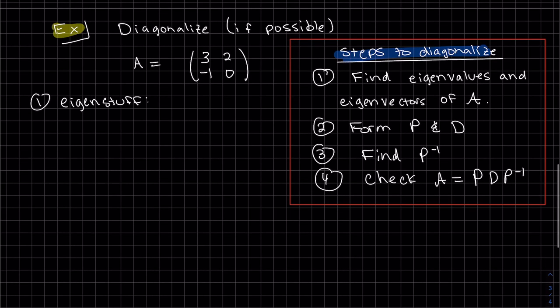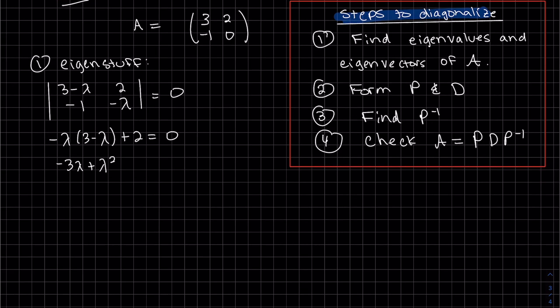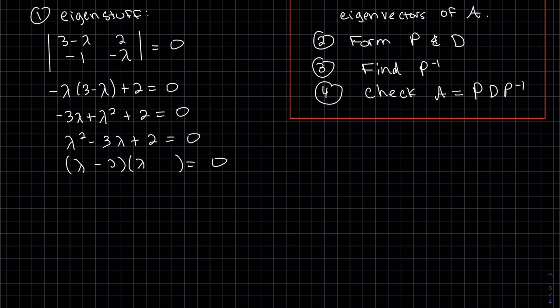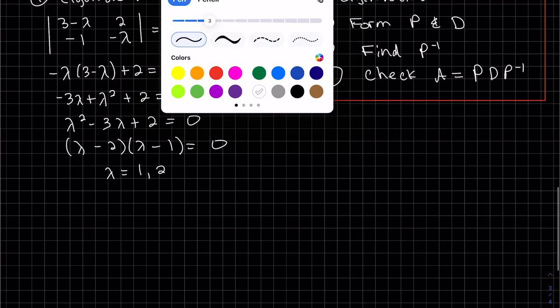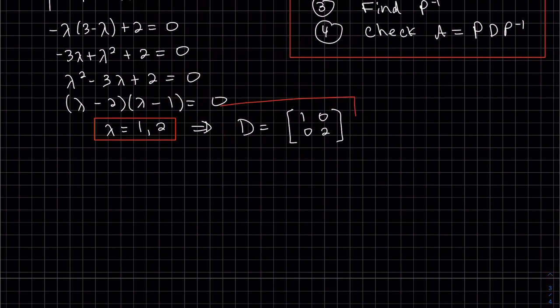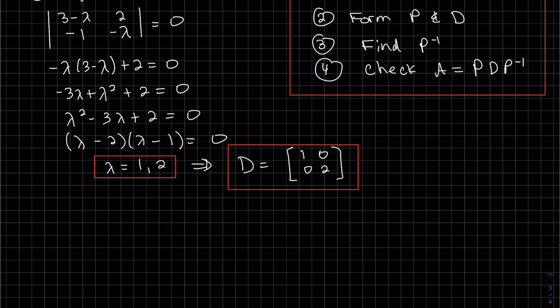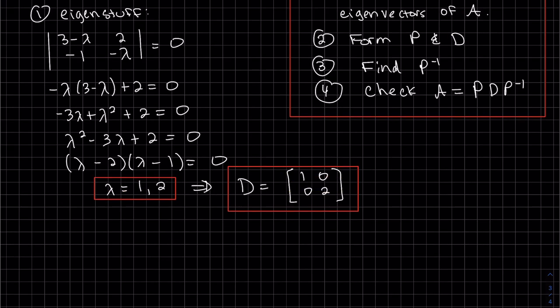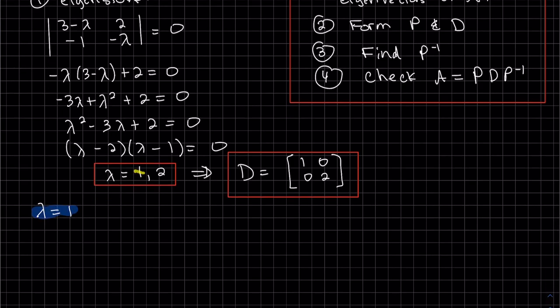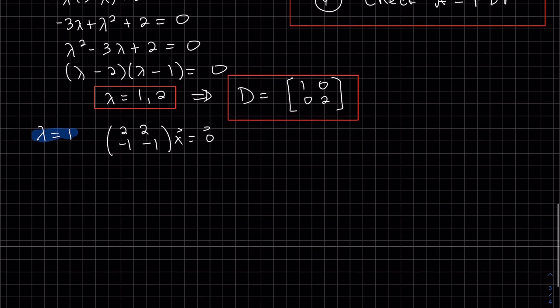So let's do it. Let's find our eigenstuff, eigenvalues first. So, our eigenvalues are one and two and so I've made my diagonal matrix. So now let's find the corresponding eigenvectors. Plugging one in for lambda.